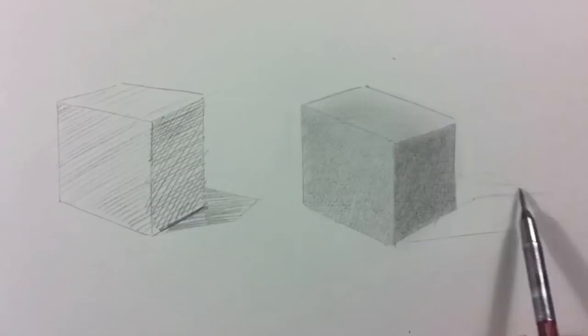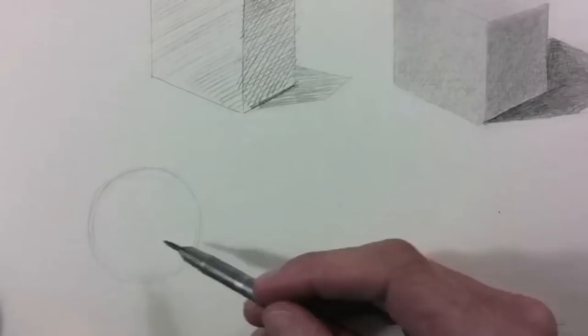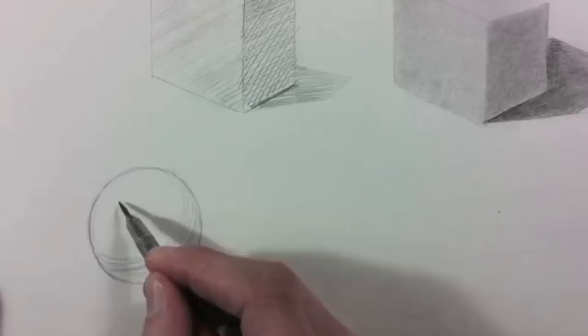Of course you can use different types of shading in the same drawing. When shading sometimes it's good to follow the shape of the object. Let's do an example with a sphere. It could be shaded with circular lines to show the form.